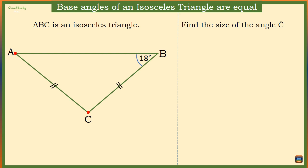We are required to find the size of angle C. We need to know the size of angle A first. Now, since the side AC is equal in length to the side BC, it implies that angle A is equal to angle B, which is 18 degrees.